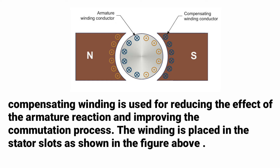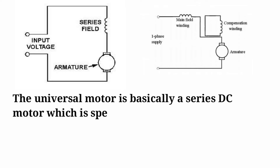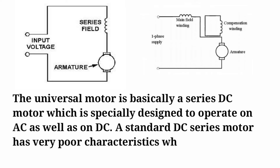A compensating winding is used to reduce the effect of armature reaction and improve the commutation process — similar to its use in DC motors. The winding is placed in stator slots as shown in the figure. The construction and operation of the universal motor is similar to a DC series motor: the series field winding and armature are connected in series, with an extra compensating winding to reduce armature reaction. However, unlike the DC series motor, it can be used for both AC and DC supply.